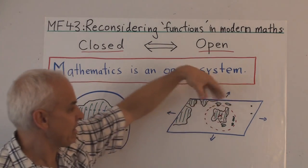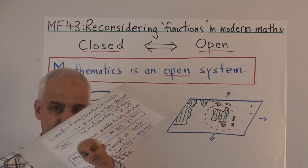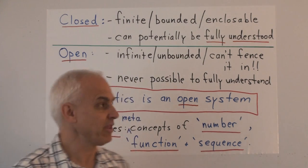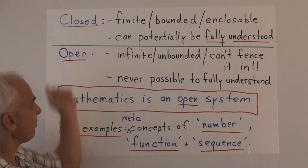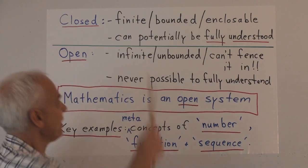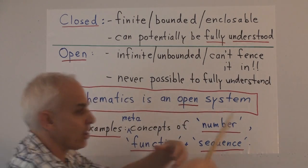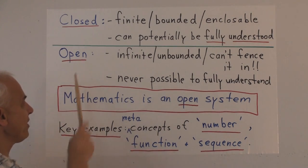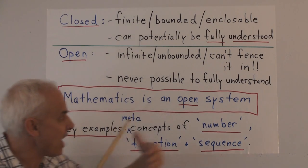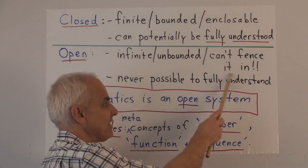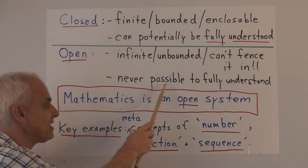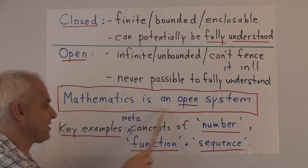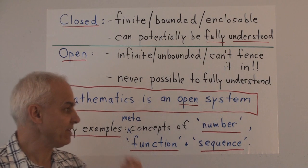This distinction between closed and open is a meta-mathematical idea — it's not actually within mathematics itself. Closed roughly means that it's finite, or bounded, encloseable, and can potentially be fully understood. While open suggests something that's infinite, unbounded, keeps going — you can't fence it in. With an open system, it's never possible to fully understand it; our understanding is always partial. And in my opinion, mathematics is more like an open system.